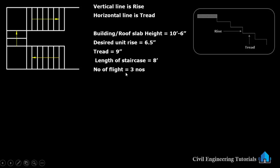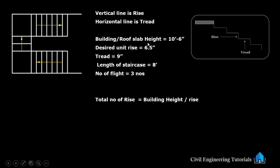Desired unit rise: 6.5 inch. Tread: 9 inch. Length of staircase: 8 feet. Number of flights: 3. Now first we need to calculate the total number of risers. Total number of risers equals roof slab height divided by rise. Roof slab height is 10 feet 6 inch, and desired unit rise is 6.5 inch.